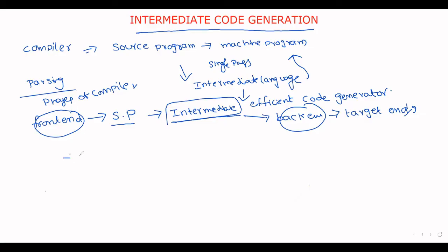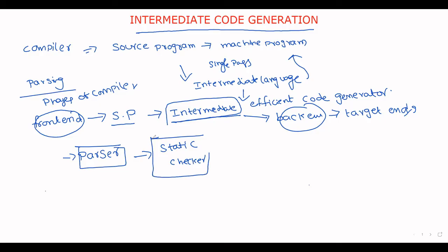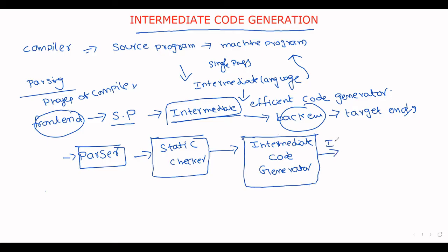Assume here we have the parser. Each and every time we perform a static checker to check for syntax mistakes. After completion of all these phases, we have the intermediate code generator. This intermediate code generation step generates the intermediate code, which is then applied to the back end code generator.